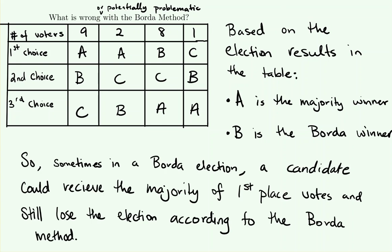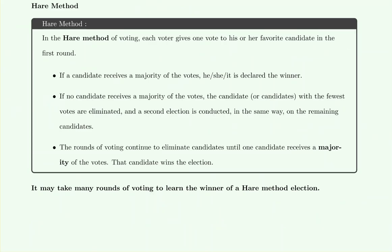One thing to be cautious about with the Borda method is that the Borda winner can differ from the majority winner. This happens when a candidate wins a majority of first-place votes but everyone else ranks it last. Candidate A got 11 first-place votes, but non-supporters ranked it last. Candidate B had only eight first-place votes, but two different groups ranked it second, boosting its Borda total. Our next video will discuss the Hare method.